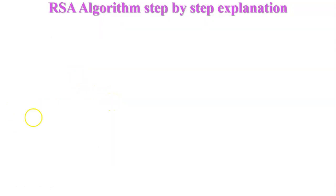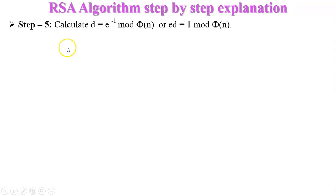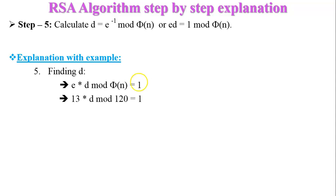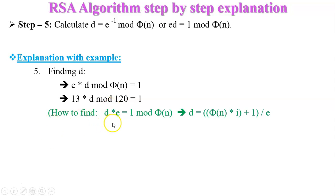Step number five: calculate d, which is the private key. d is equal to e inverse mod φ(n), or equivalently e times d equals 1 mod φ(n). Here e equals 13 and φ(n) equals 120. Simplifying: d equals (φ(n) times i plus 1) divided by e.